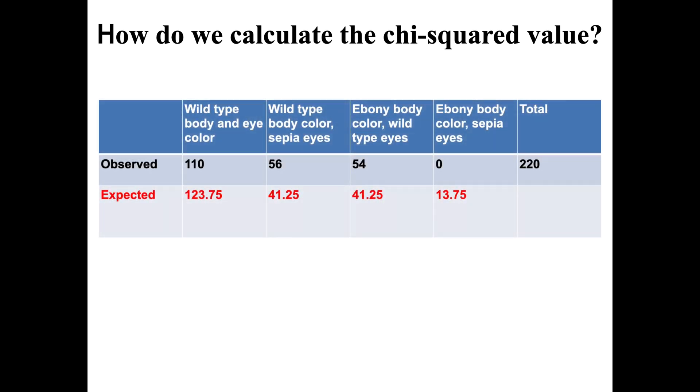But what we might have expected would have been the 9 to 3 to 3 to 1 ratio. So we would have done it as a proportion of 220. We would have expected 9 out of 16 of 220 to have been wild type in body and eye color.